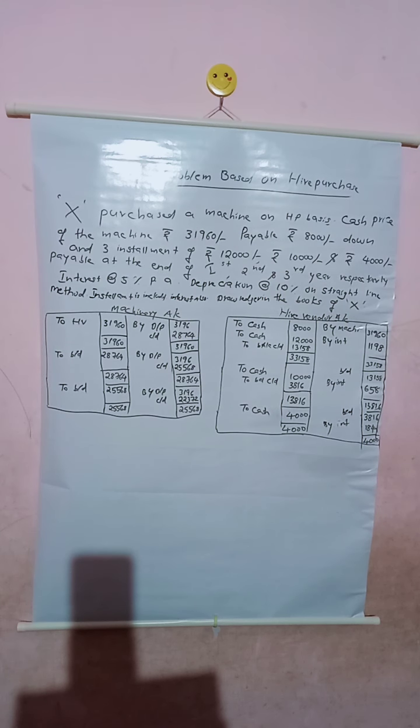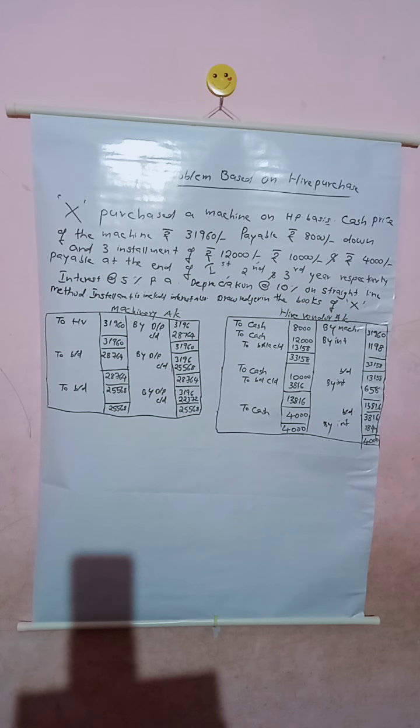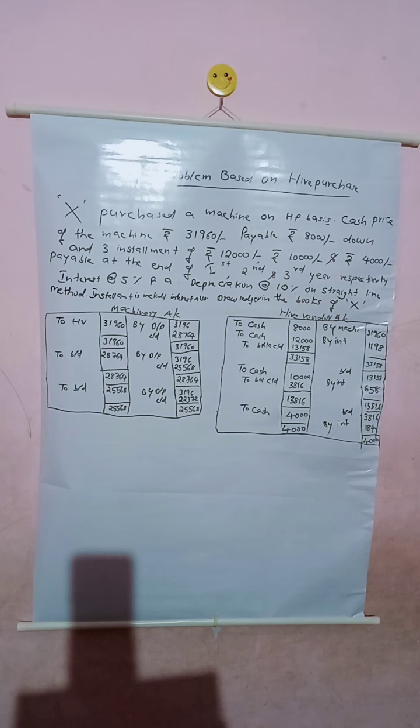So here are the main accounts: the machinery account, the hire vendor account, the interest account, and the depreciation account. These are the key ledger accounts drawn in the books of the hire purchaser.